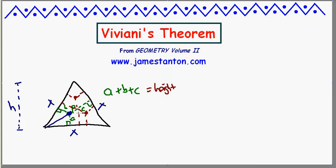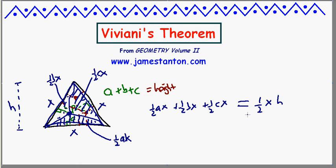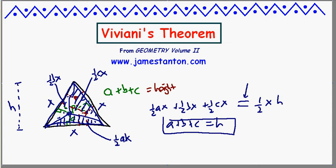One way to work out the area of the triangle is to divide it into three pieces. This shaded triangle has base X and height A, so its area is half AX. This second piece has base X and height C, giving half CX. And this remaining triangle has base X and height B, giving half BX. So the area of the triangle is half AX plus half BX plus half CX. I could also work out the area by looking at the whole thing: the whole triangle has base X and height H, so it's also half XH. I've worked out the same area in two different ways, so these must be equal. Multiplying through by 2 and dividing by X, I'm left with A plus B plus C equals H — the height of the triangle — no matter where point P is located inside the triangle.